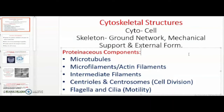Plant cells have cell walls, but animal cells have a network of these protein components throughout the cytoplasm to help provide form and stability, along with a lot of other functions. There are three main types: microtubules, microfilaments or actin filaments, and the intermediate filaments.